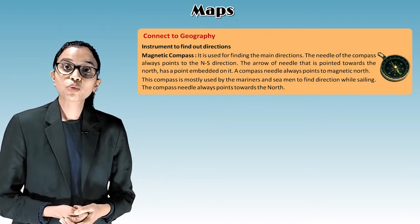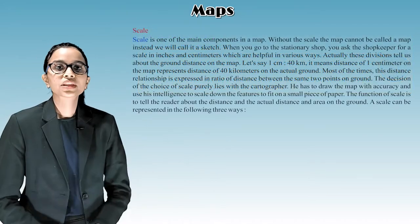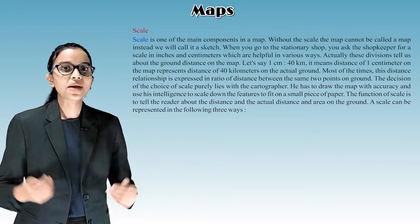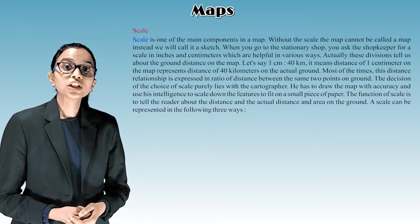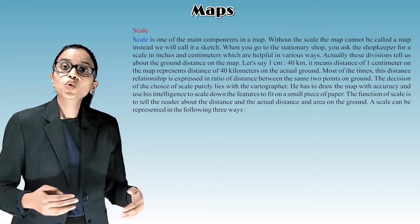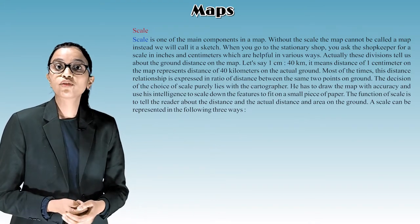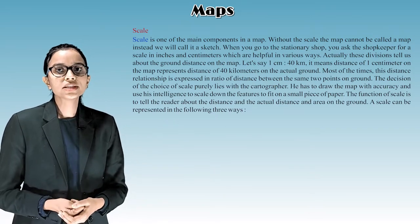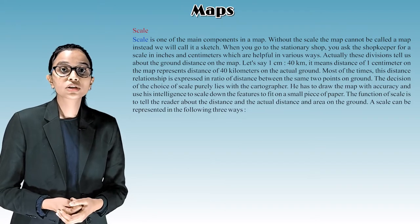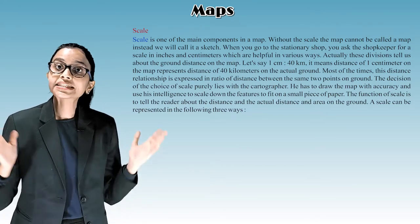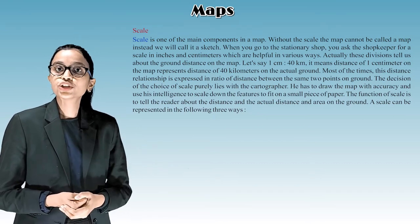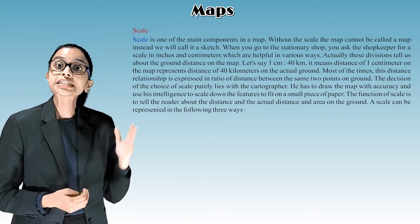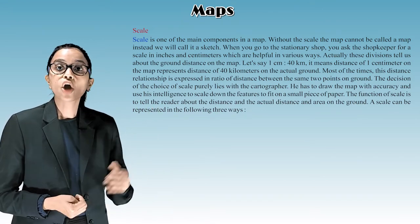The compass needle always points towards the north. Scale is one of the main components in a map. Without the scale, the map cannot be called a map. Instead, we will call it a sketch. When you go to the stationary shop, you ask the shopkeeper for a scale in inches and centimeters, which are helpful in various ways. Actually, these divisions tell us about the ground distance on the map. Let's say, 1 centimeter ratio 40 kilometers.